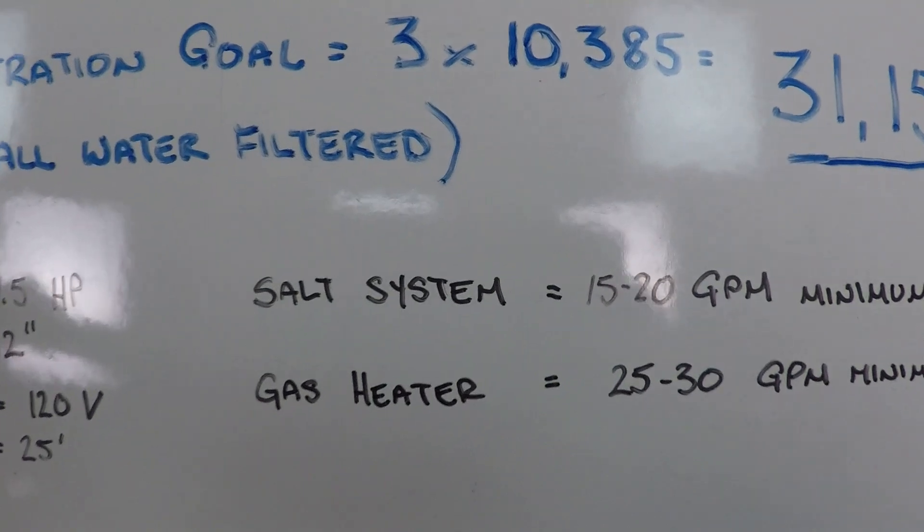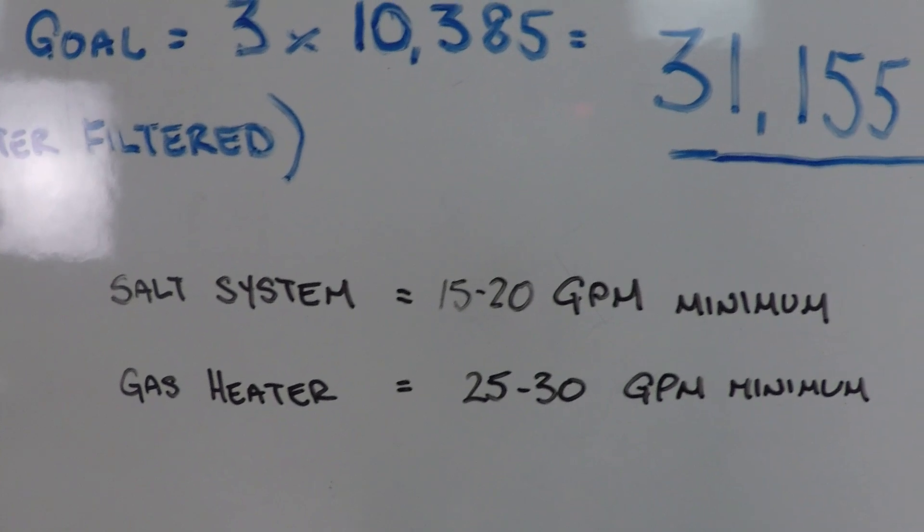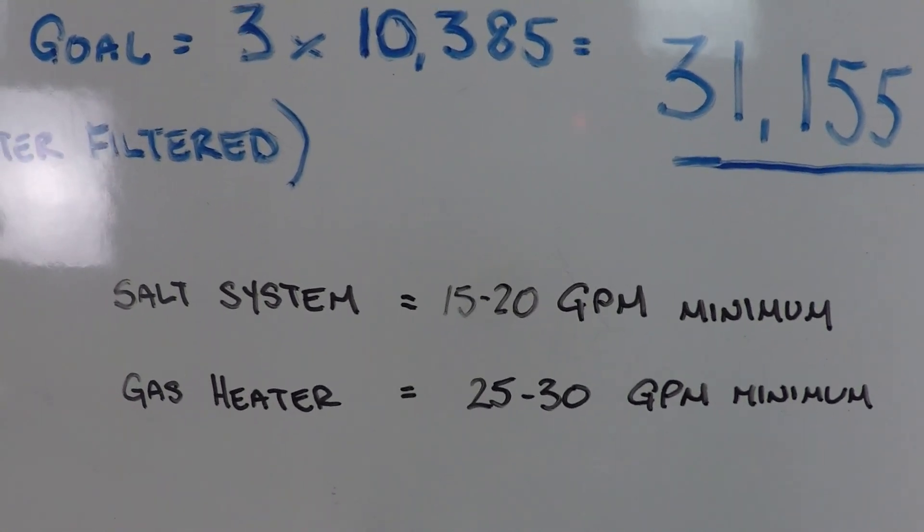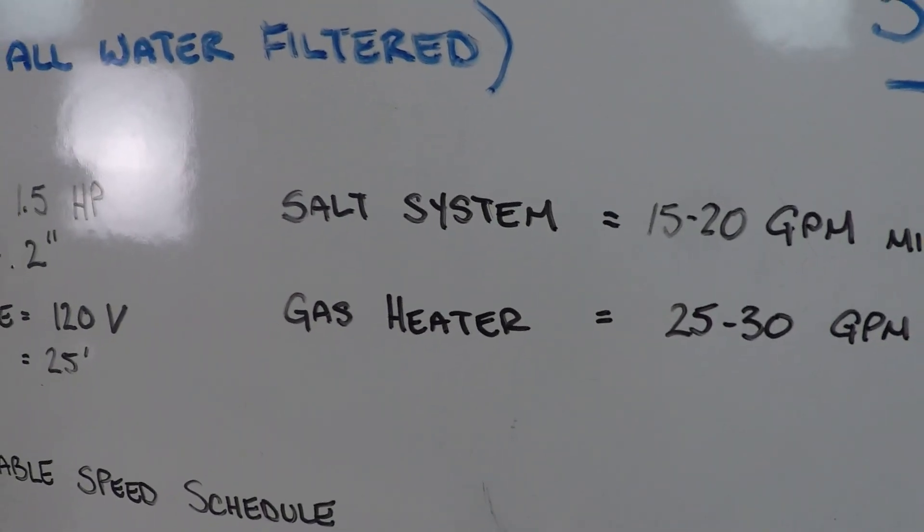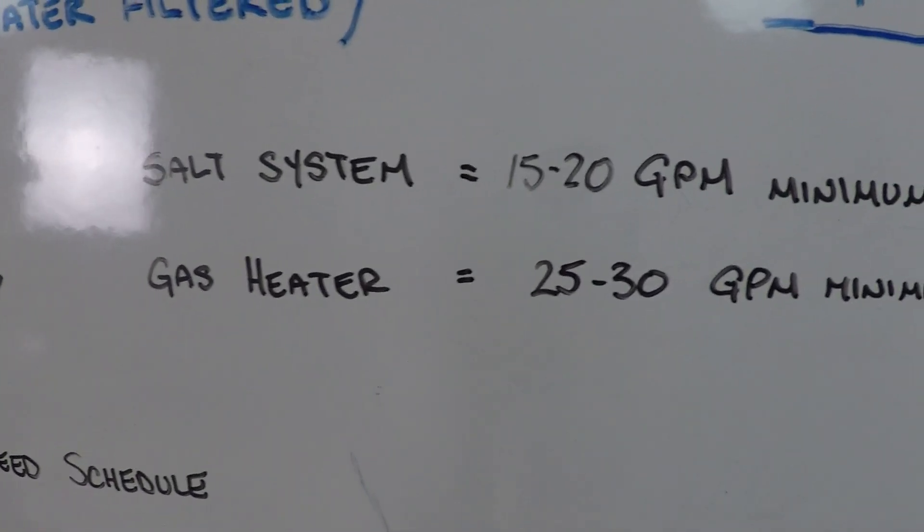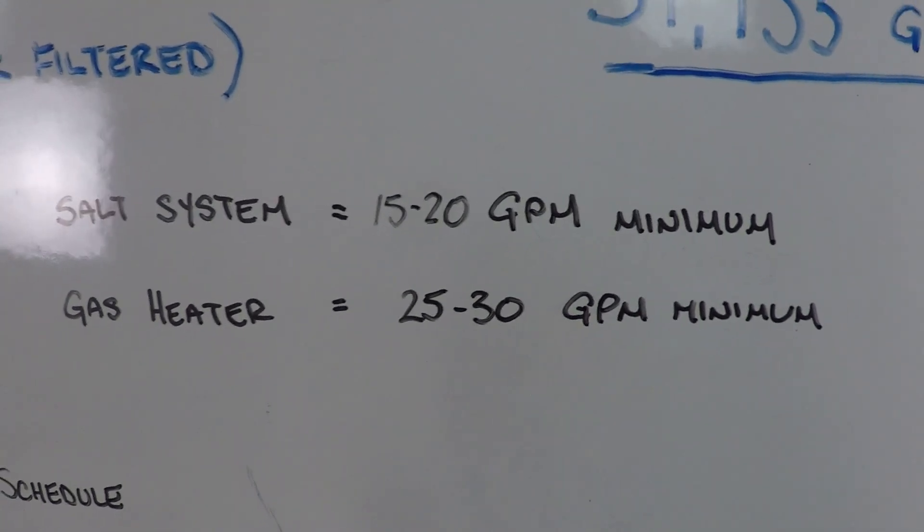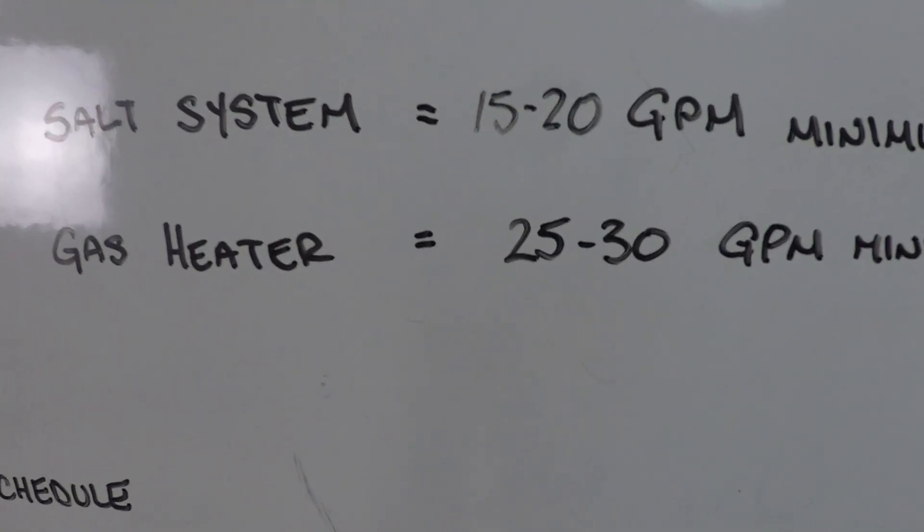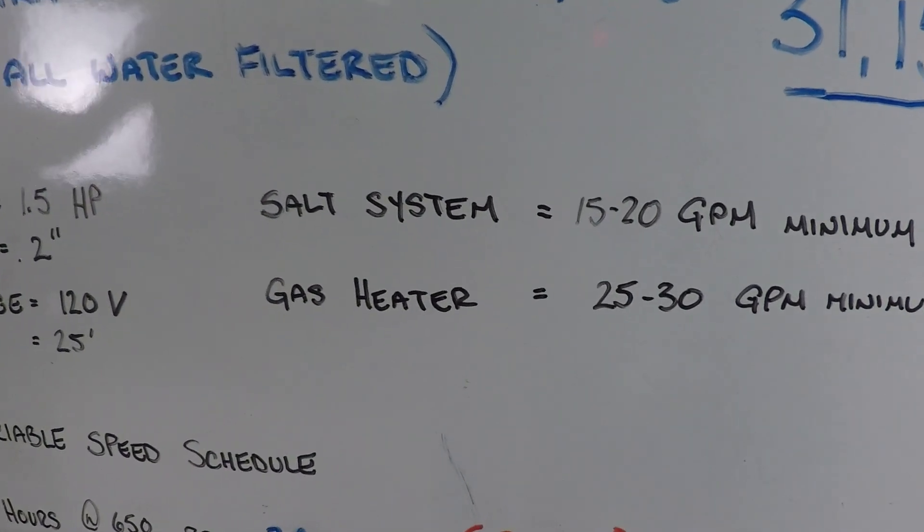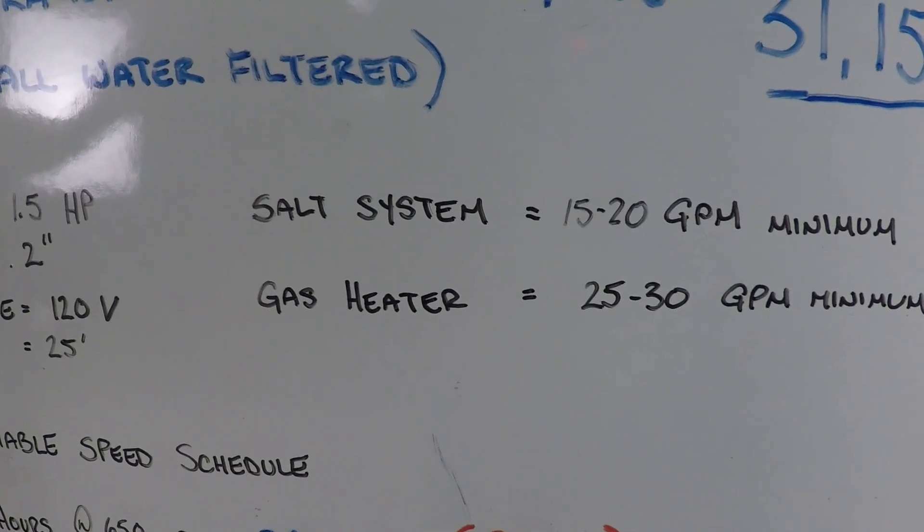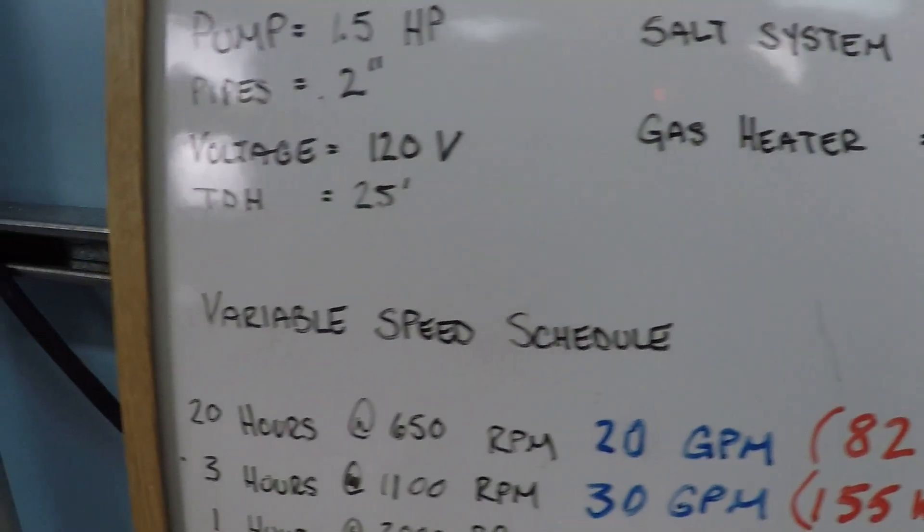Some other stuff that we need to consider: What if there's a salt system on this pool? A salt system is going to need, on average, 15 to 20 gallons per minute in order to operate. Same with a gas heater. If you had a gas heater, on average, you're going to need 25 to 30 gallons per minute minimum in order to operate, maybe a little bit more than that for some of the larger heaters. These are the things you need to consider when deciding exactly what RPM you're going to be operating this pool at. Let's break that down further.